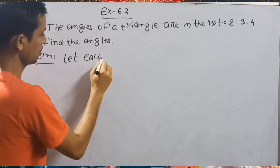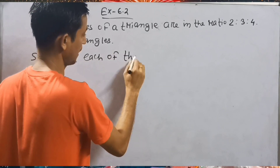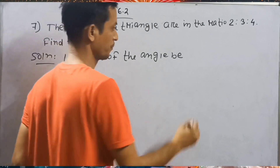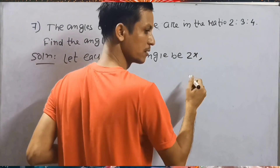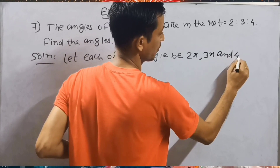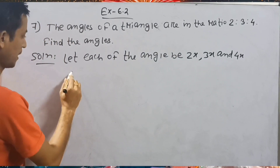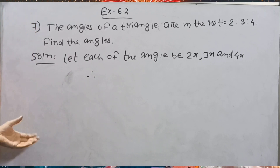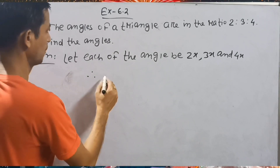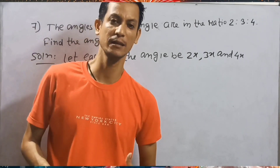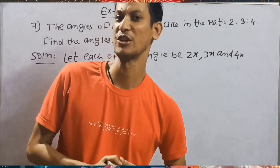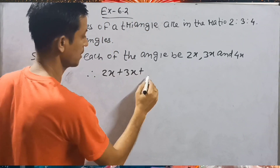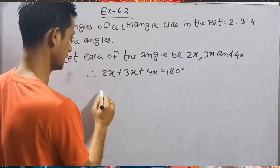Let each of the angles be 2x, 3x, and 4x. Now according to the question, we know the sum of 3 angles in a triangle is equal to 180 degrees. So, 2x plus 3x plus 4x is equal to 180 degrees.